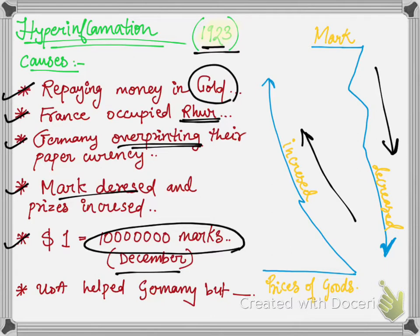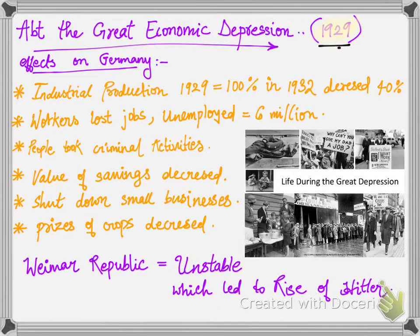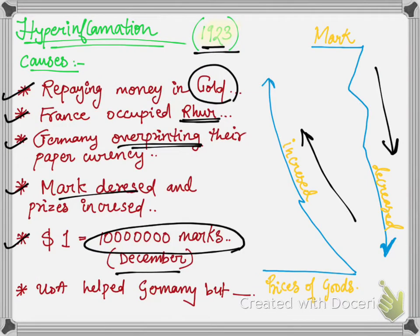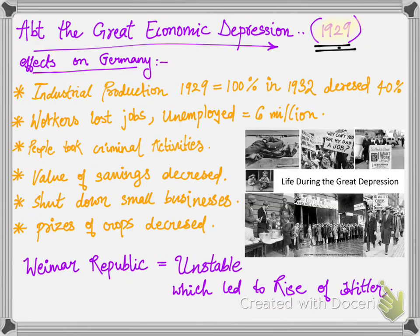Germany's condition became worse with the Great Economic Depression faced in 1929. This economic depression came in the USA, but it affected Germany as well — because when Germany was facing hyperinflation, USA had given loans to Germany. A disturbance in USA's stock markets caused an economic depression that affected Germany too. The economic crisis hit Germany's economy very badly.